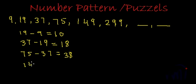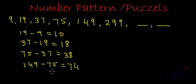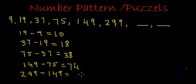149 minus 75 is equal to 74. Then 299 minus 149 is equal to 150.